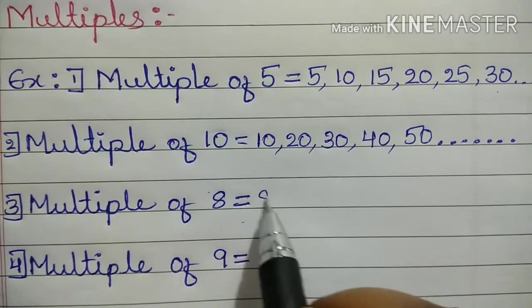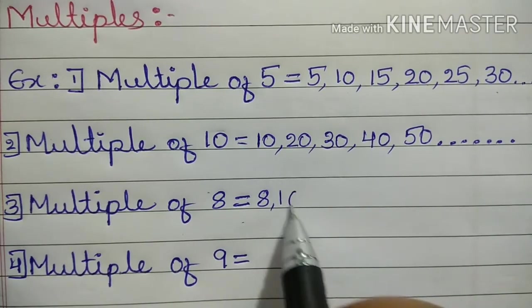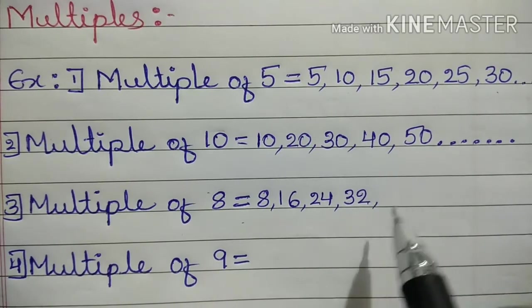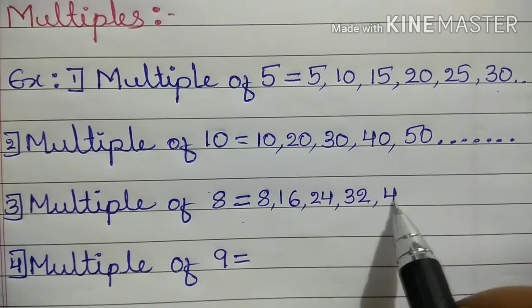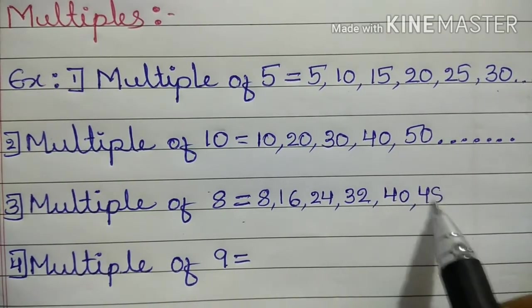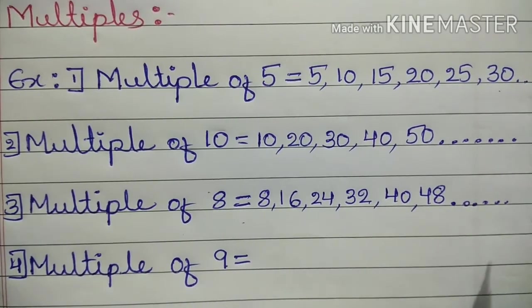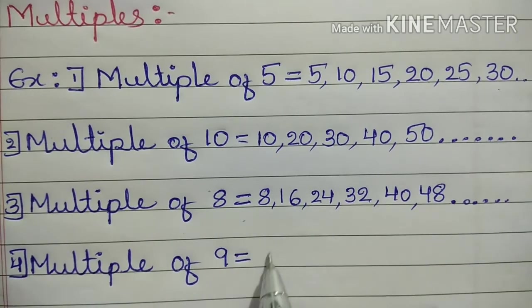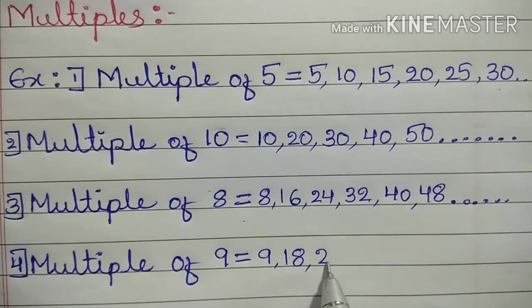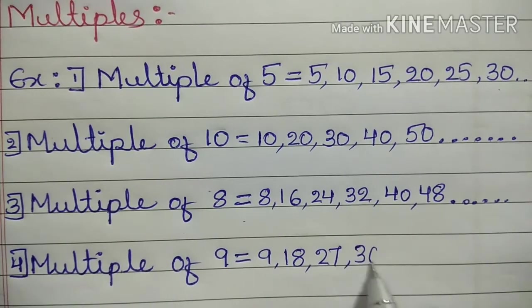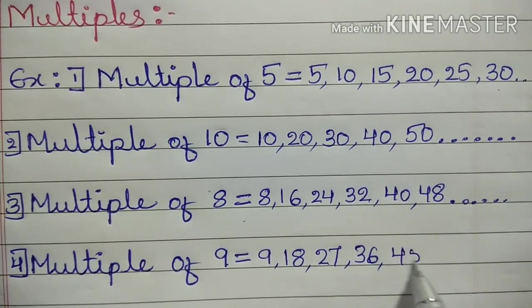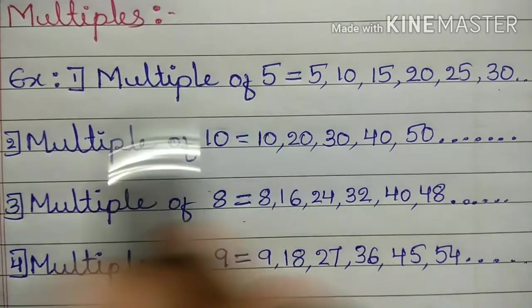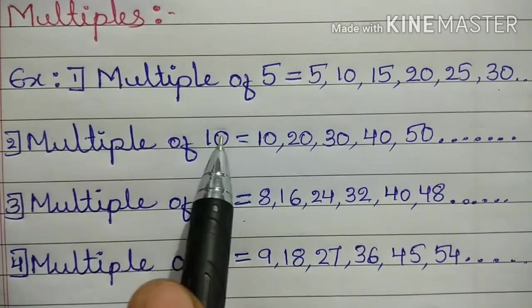Next, multiple of 8: 8 times 1 is 8, 8 times 2 is 16, 8 times 3 is 24, 8 times 4 is 32, 8 times 5 is 40, 8 times 6 is 48, and so on. Multiple of 9: 9 times 1 is 9, 9 times 2 is 18, 9 times 3 is 27, 9 times 4 is 36, 9 times 5 is 45, 9 times 6 is 54, and so on. Factors and multiples are two different things.